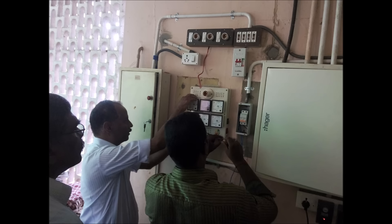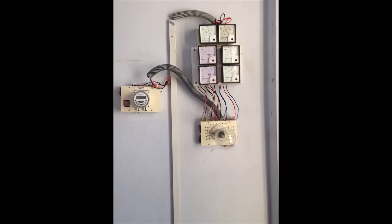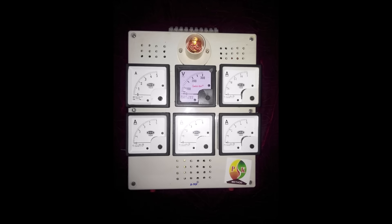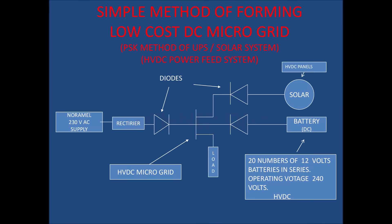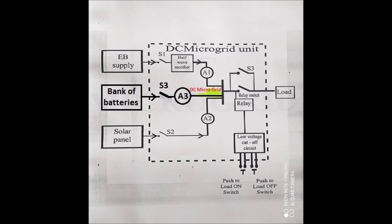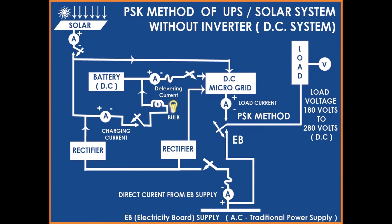Whereas technological development means different technologies are combined together to derive one new technology — that is called technological development. When the research outcome is implemented practically, then it is a technology. So by combining two or three technologies to derive a new technology, or a new technology coming out from research, we can say it is technological development.